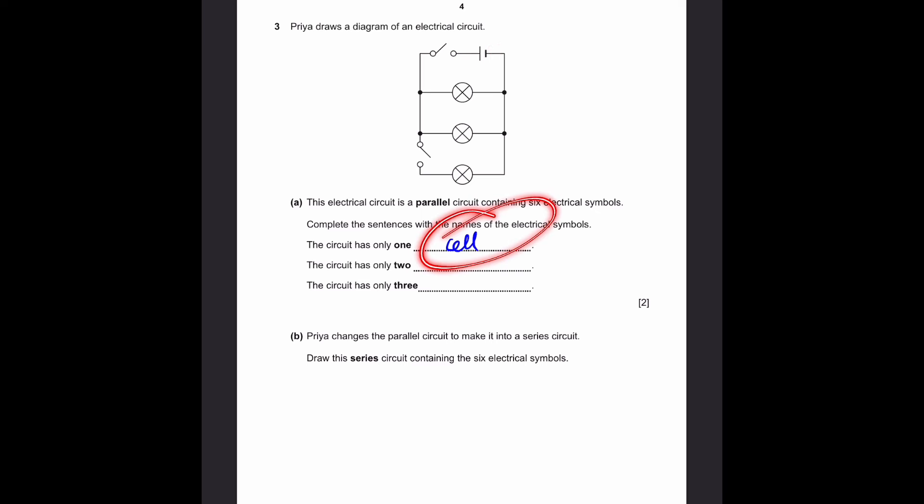The circuit has only two... We can see that these two are, of course, two in number. Therefore, we can write the name of these two, which is switches. Even if you write open switch, it's also fine. The answer just has to contain switches inside. The circuit has only three... There are three lamps in the circuit, which is given by this symbol. Therefore, we can just write three lamps. That's our answer.